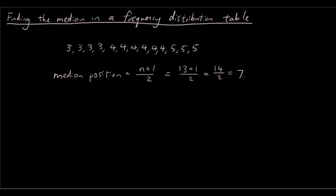So the 7th number from the beginning — 1, 2, 3, 4, 5, 6, 7 — this number here is our median.